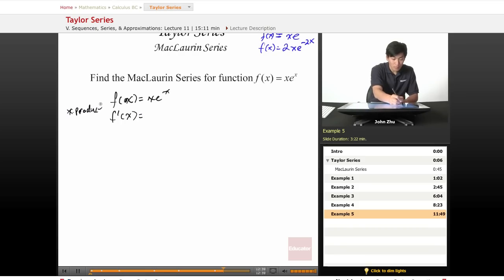So f prime of x is going to be derivative of the first term, 1 times the second term, plus derivative of the second term times the first term. So x e to the x.